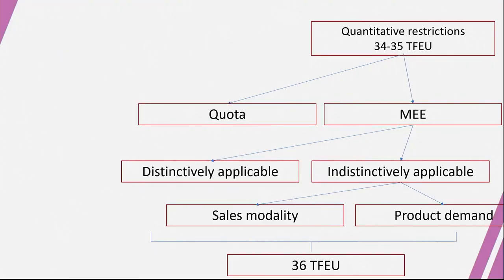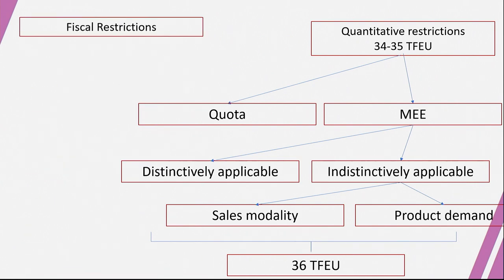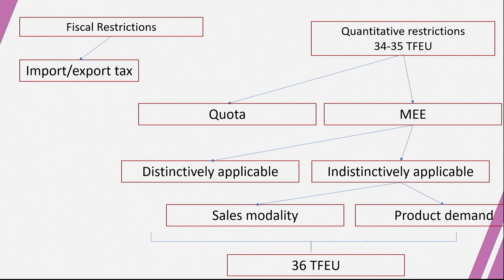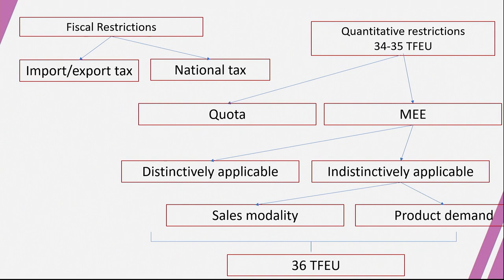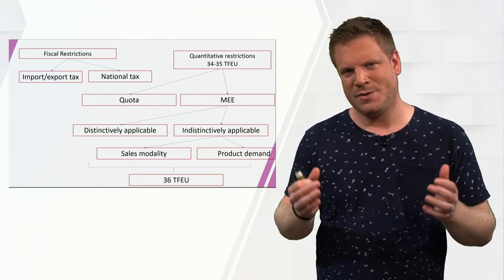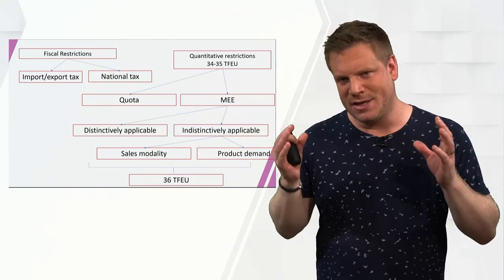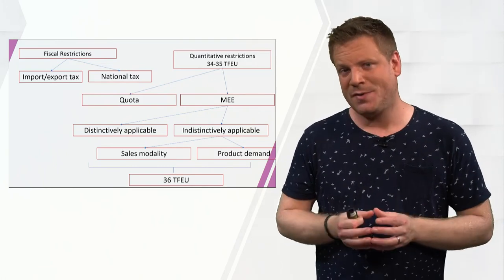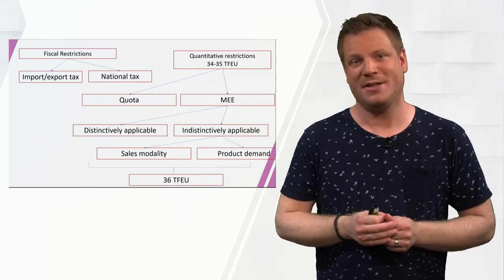Just to complete the picture, fiscal restrictions can also be narrowed down to two types: an import and export tax, and the abuse of a national tax policy to discriminate against foreign products. All of this is a summary of the European Union free movement of goods in a nutshell. Thank you very much for watching.